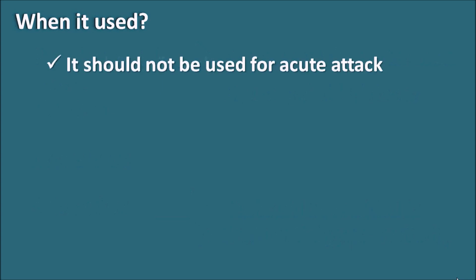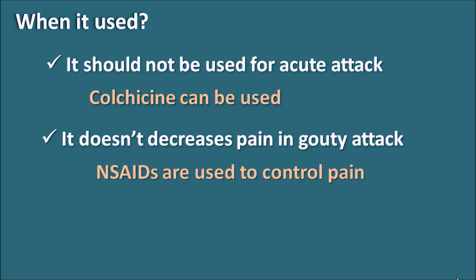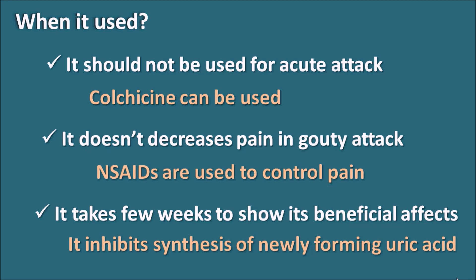Allopurinol is used in gout but not in an acute attack of gout; another drug, colchicine, is used for acute attacks. In an acute attack, allopurinol's reduction of uric acid synthesis may trigger compensatory mechanisms that further increase uric acid levels, so it is not preferred acutely. It is preferred for chronic treatment of gout. Second, allopurinol is not a painkiller or analgesic — it does not decrease pain in a gouty attack; NSAIDs are given to control pain in gouty arthritis. Third, because allopurinol inhibits uric acid synthesis, it takes a few weeks to show beneficial effects, as it acts only on newly forming uric acid and has no action on already-formed uric acid.